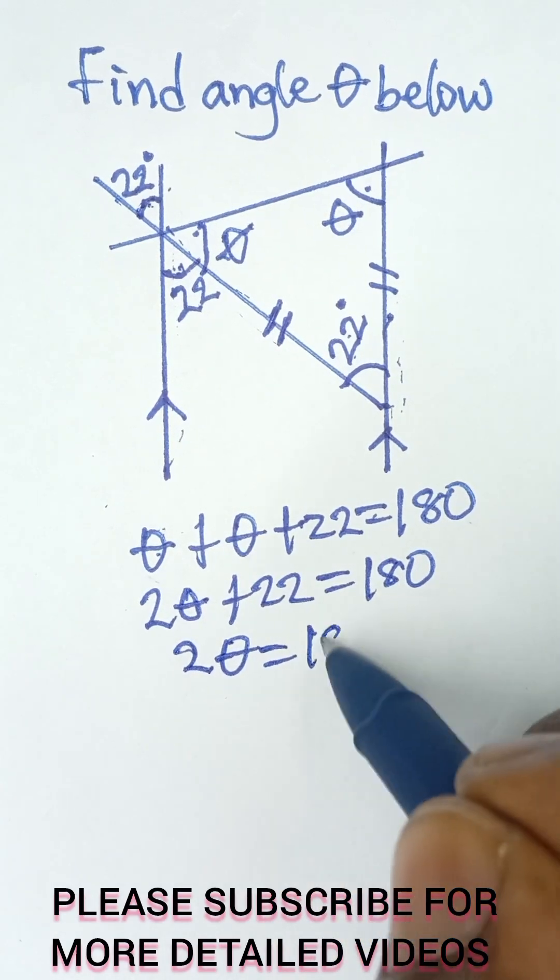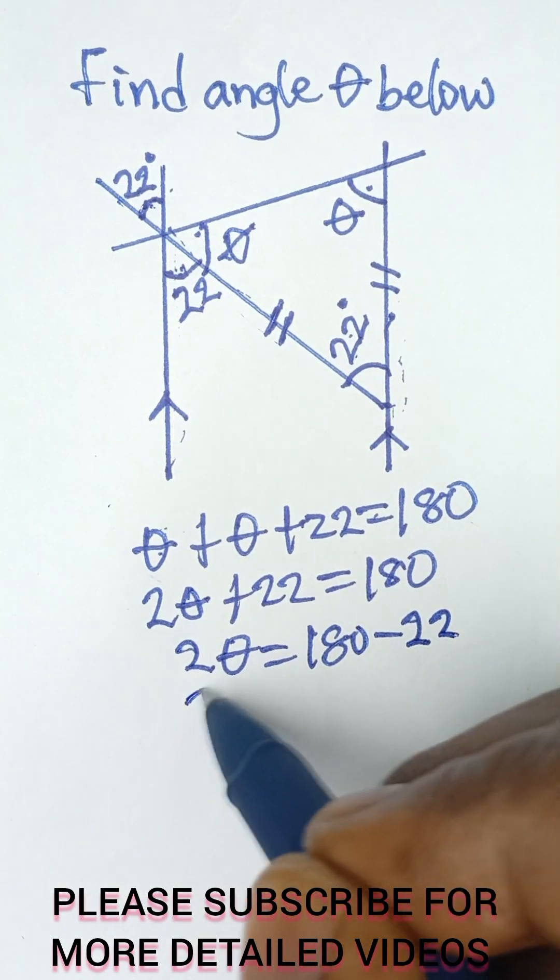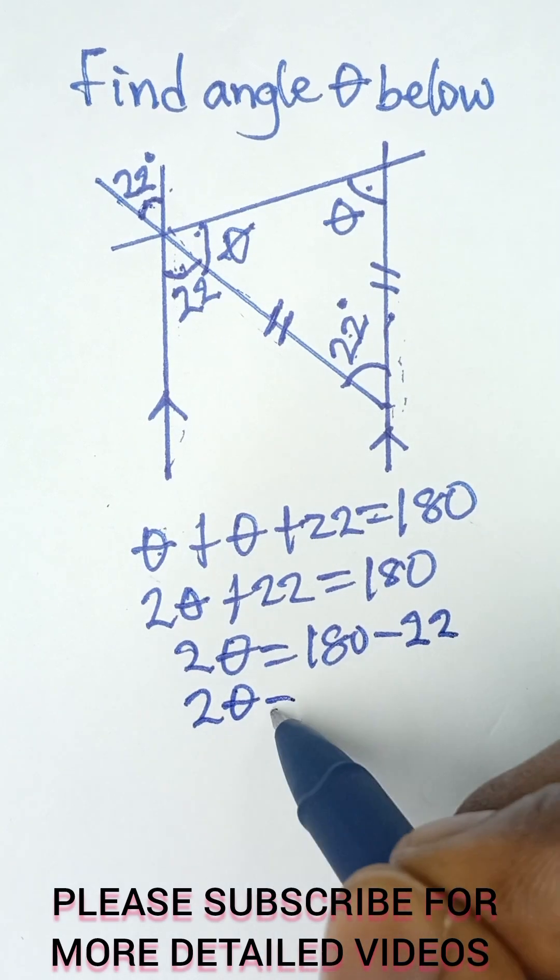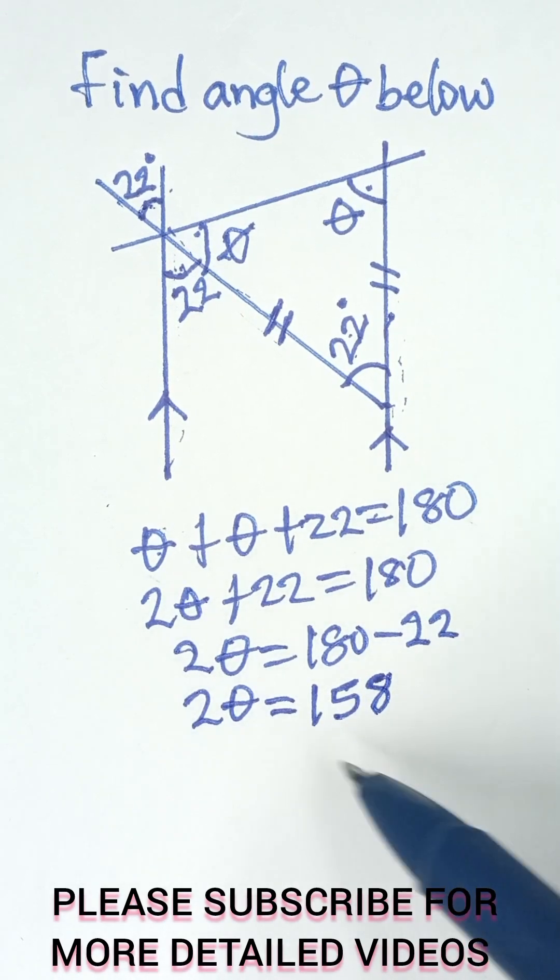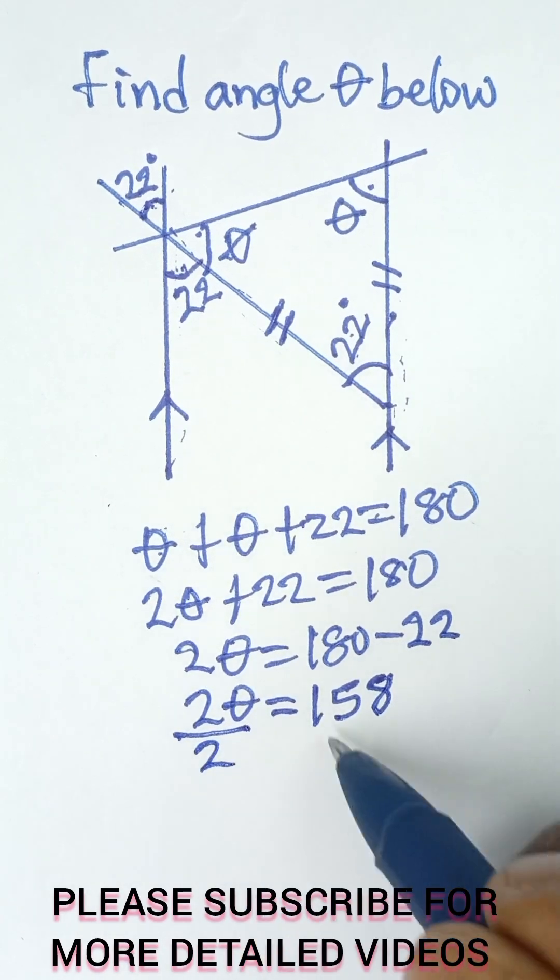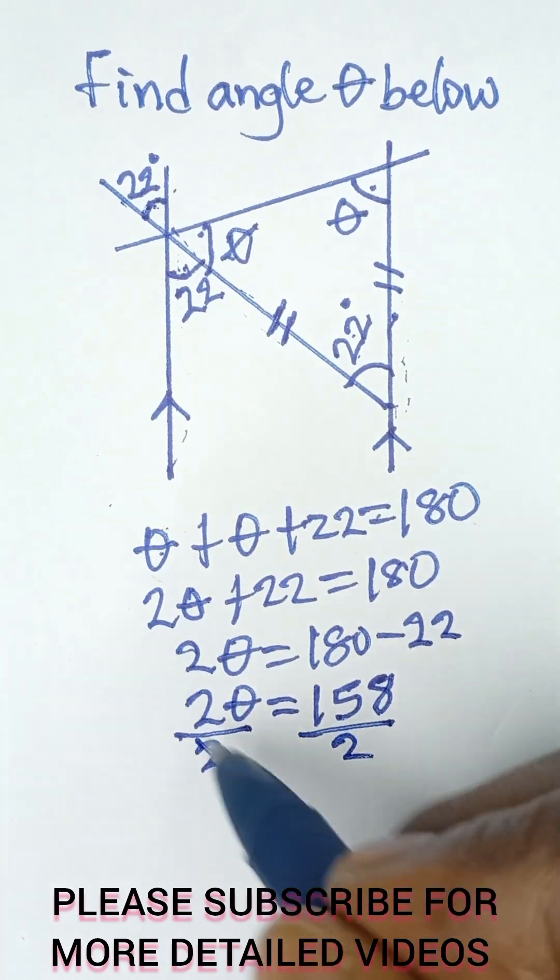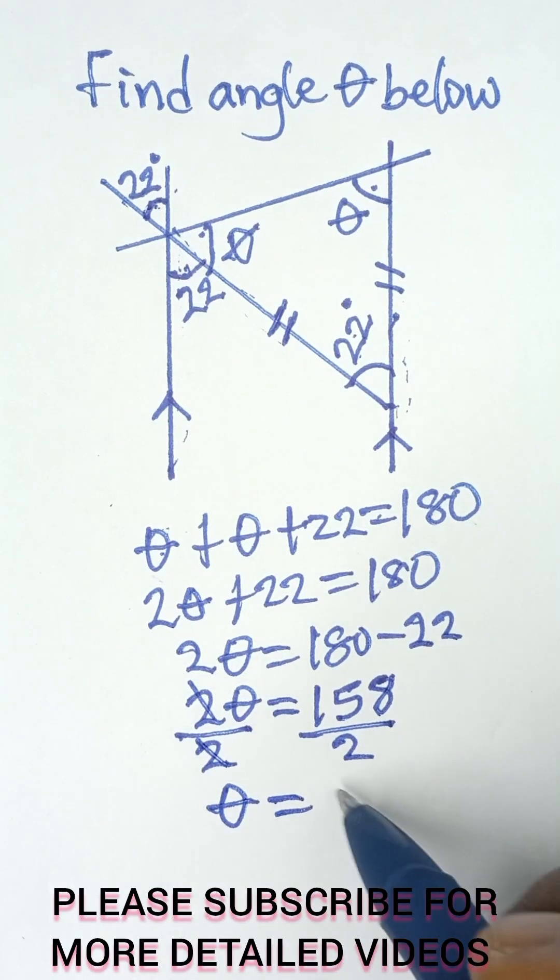So 2 theta is equal to 158. So this will be 158, and then now we divide both sides by 2. Divide this by 2, 2 cancels 2 here, and finally we have theta is equal to...